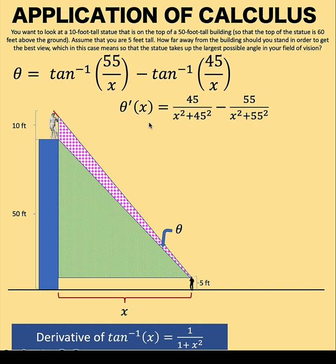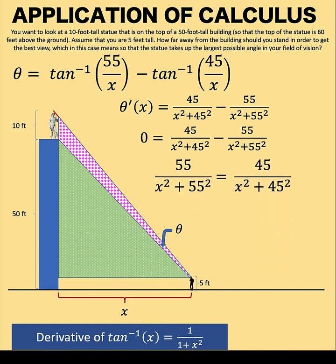Now, in order to optimize this value, we need to find the critical point. And that happens when the derivative is equal to 0. So equating theta prime of x to 0, we now arrive at this equation. And we add 55 over x squared plus 55 squared to both sides of the equation. Then multiplying by the least common denominator, we do cross multiplication, and we arrive at this equation.